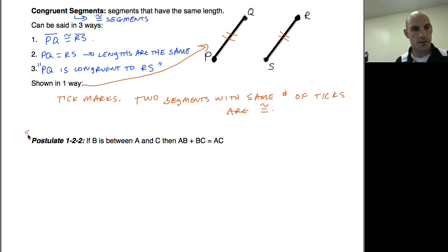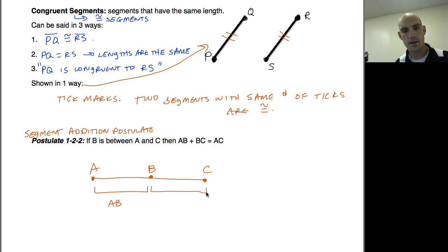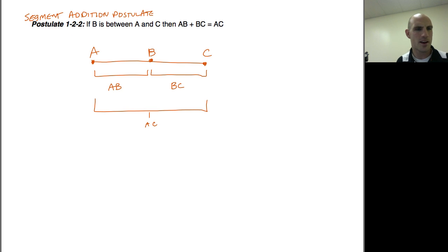Postulate 1-2-2 is called the segment addition postulate. Because it's talking about having three points on a line. And if I draw a line here and I look at what this postulate is saying, it's saying if B is between A and C, then AB plus BC is equal to AC. You can see how this wouldn't be that difficult to understand. For example, if I said if this was 4 and this was 3, we could say AB equals 4, BC equals 3. So 4 plus 3 equals 7. And that would stem from AB plus BC equals AC. Well, AC would be 7 because it's the total length. One part is 4, one part is 3. Not really too difficult.